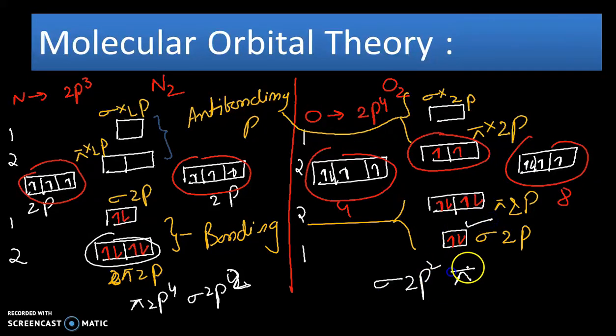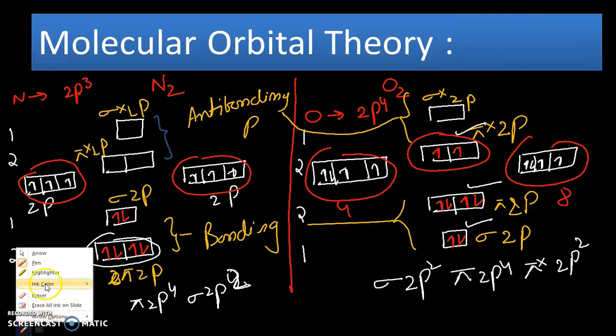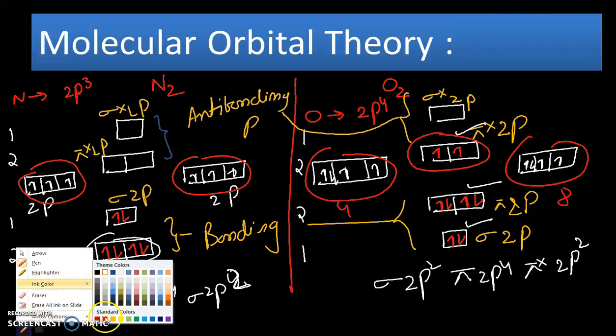For oxygen: sigma 2p2, pi 2p4, and pi star 2p2. The next concept is about bond order.